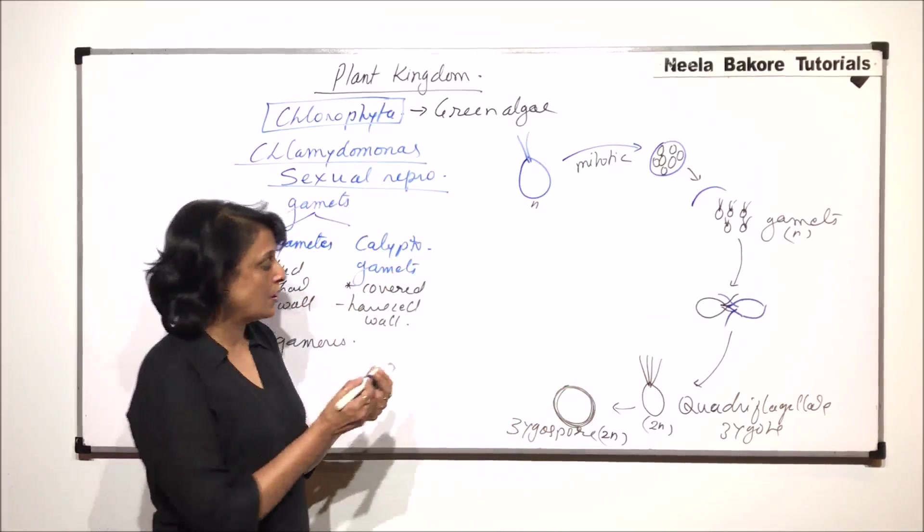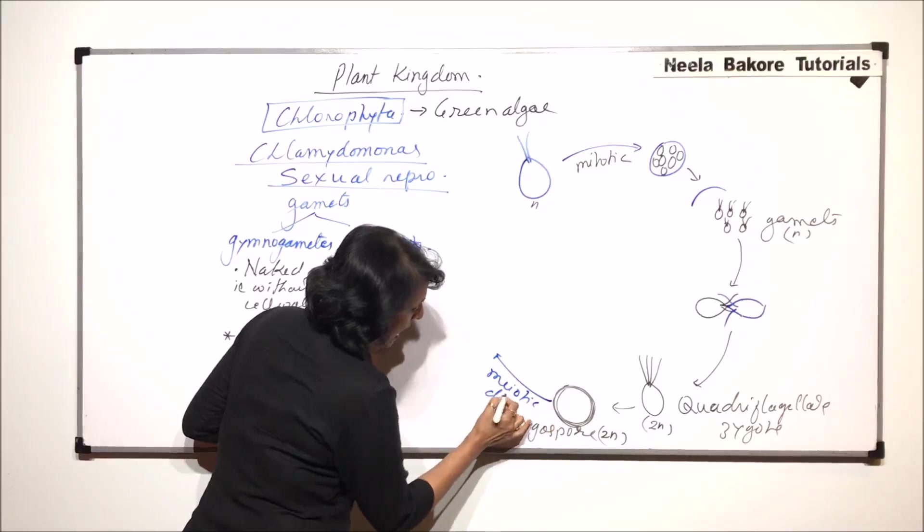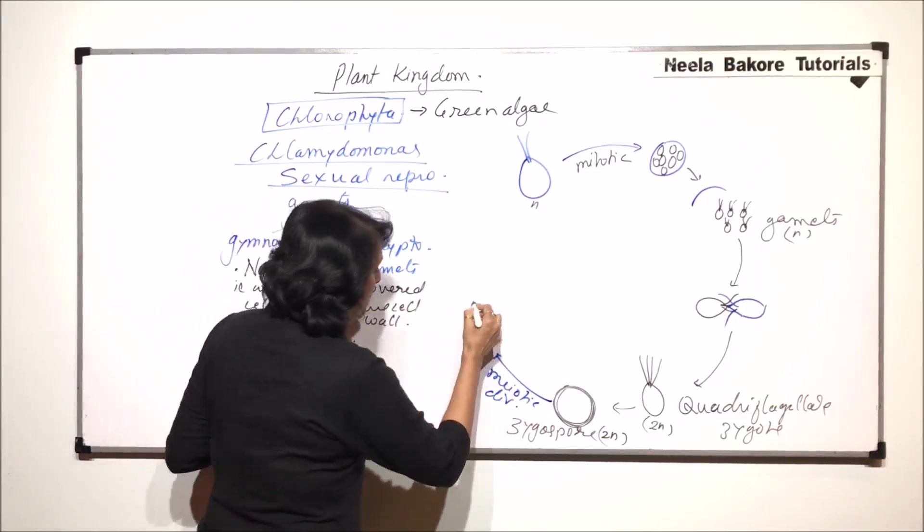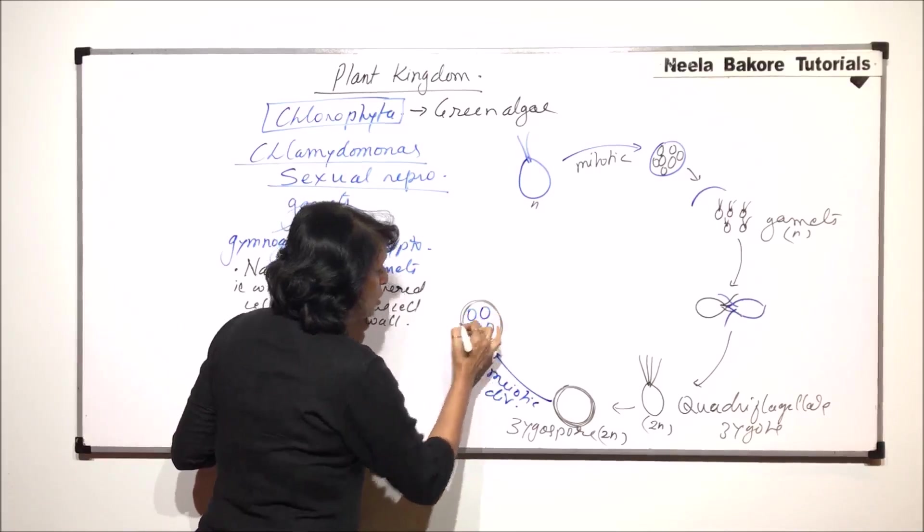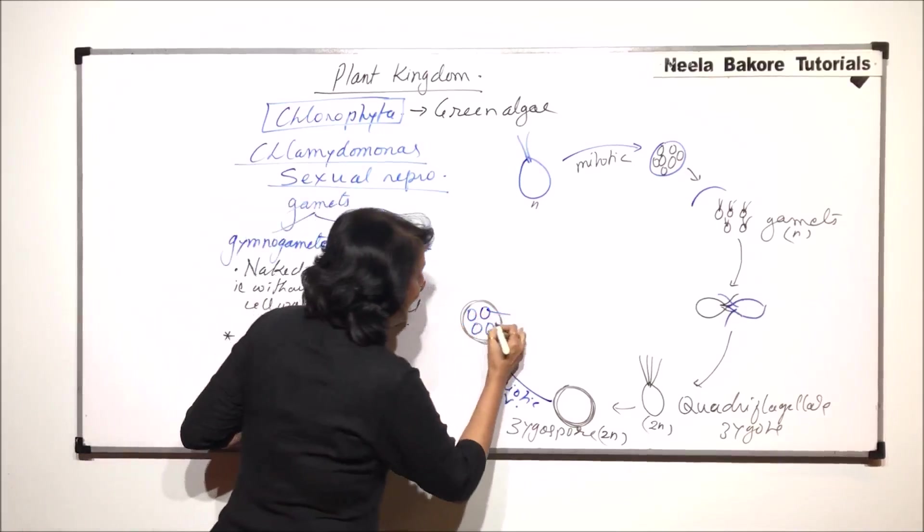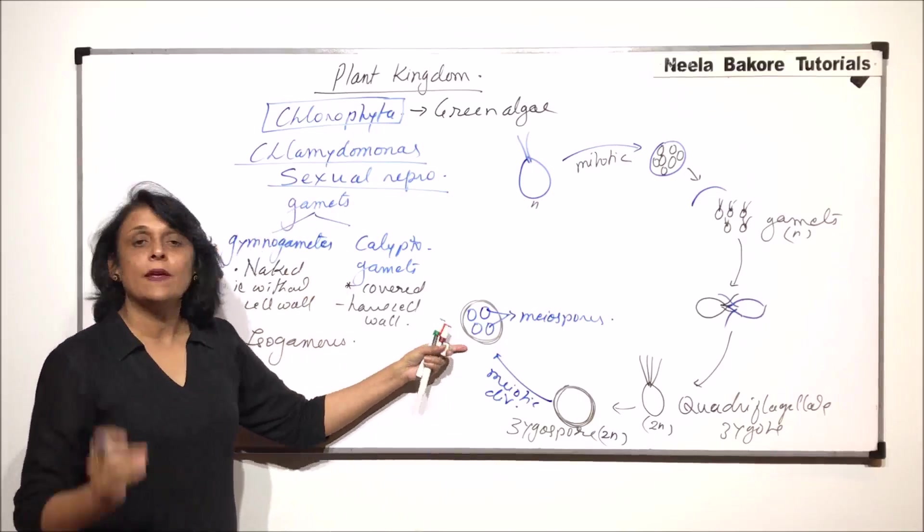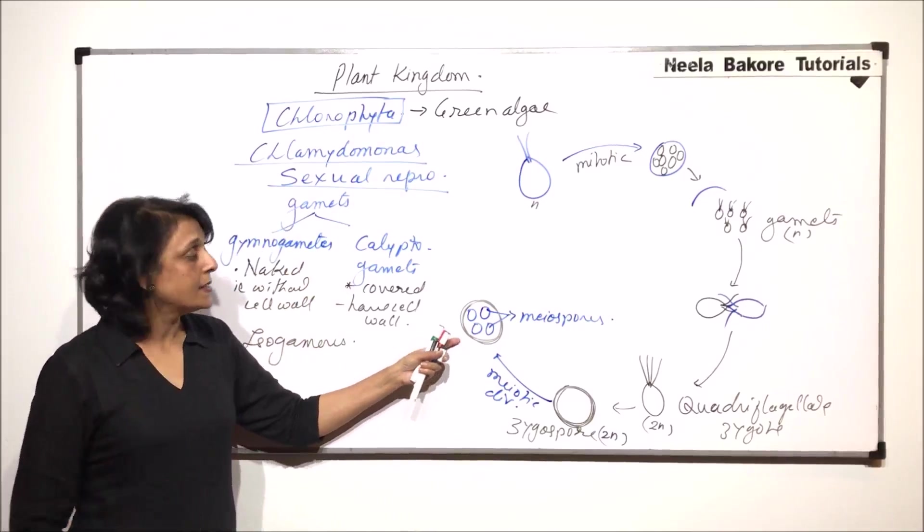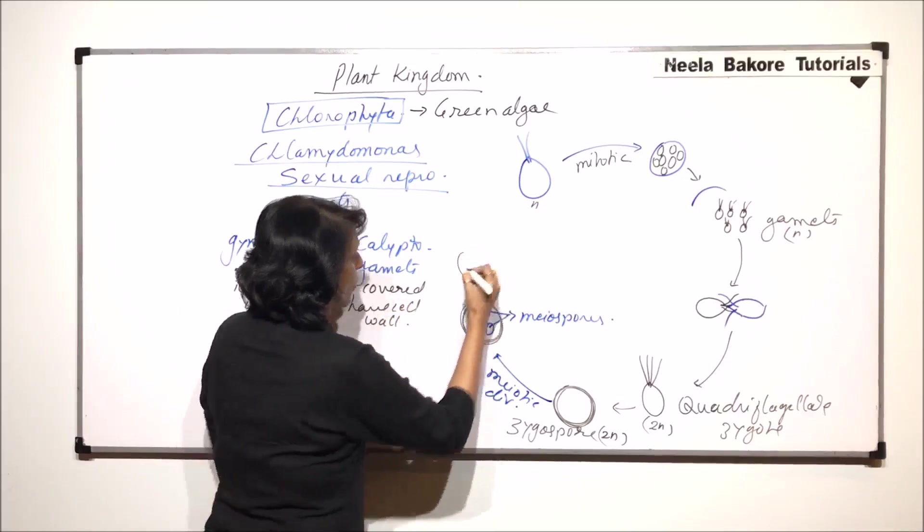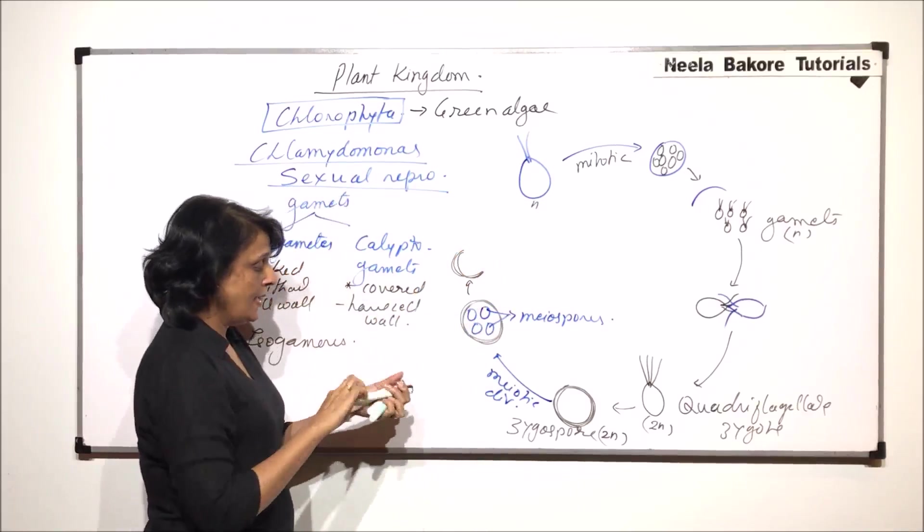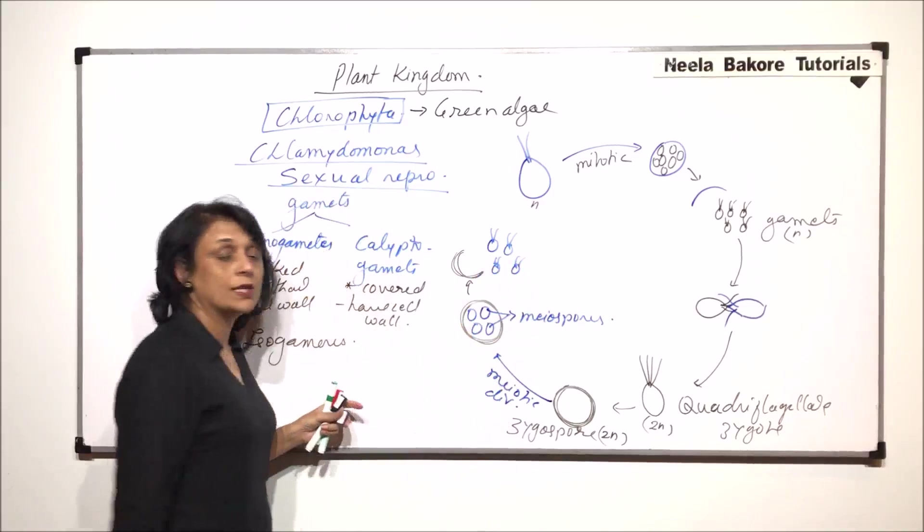Now, the zygospore which is a diploid structure undergoes meiosis or meiotic division. After meiotic division, there would be the thick wall of the zygospore and there would be four spores which would be produced. These are called the meiotic spores and after some time when they become of significant size, then the outer wall is going to rupture releasing these spores.